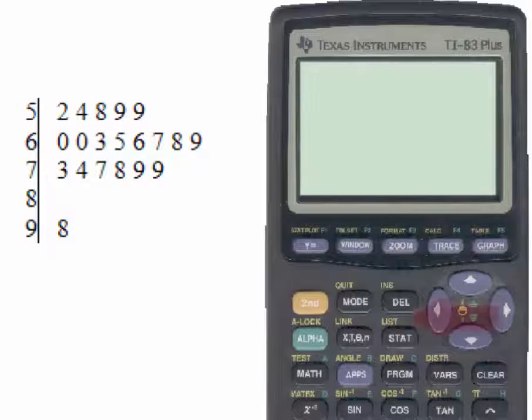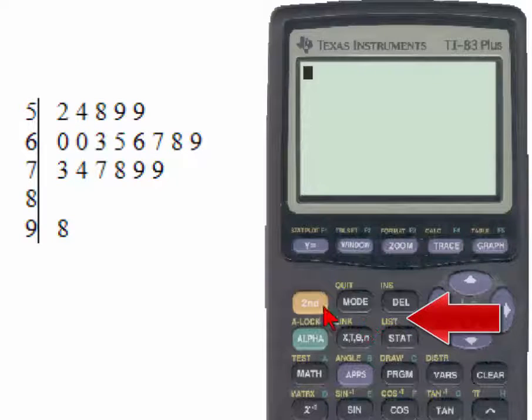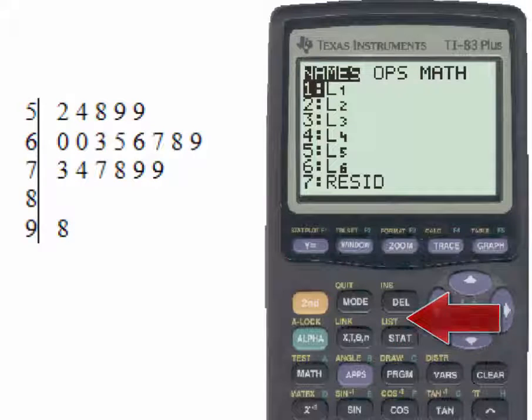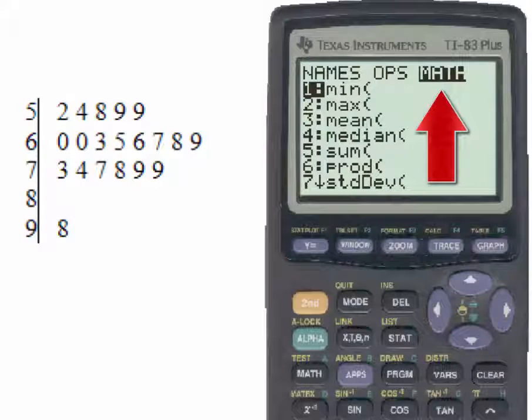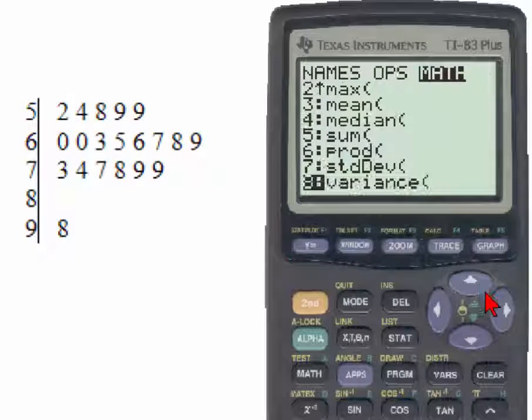We will go to the list button, which is found above the stat key, so we'll use the yellow second key and list. Now we'll go to the math menu, and at the bottom of the list, which we can get to by hitting the up arrow, we find number eight, variance.